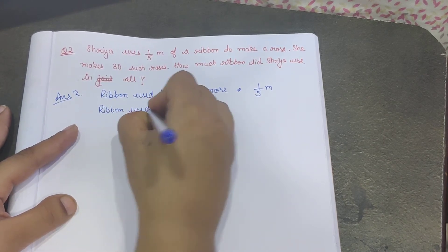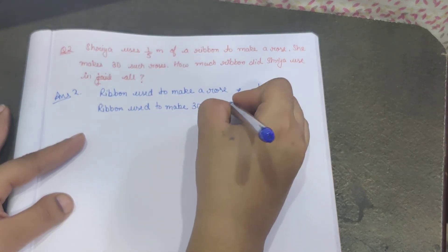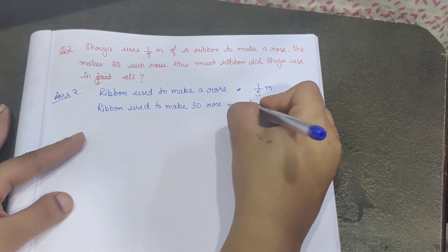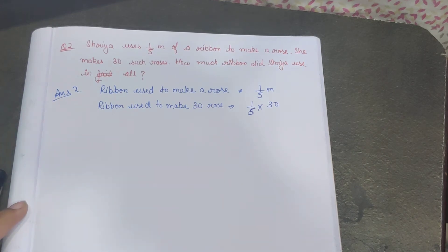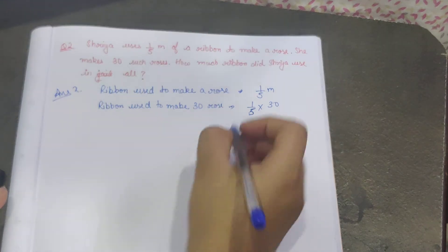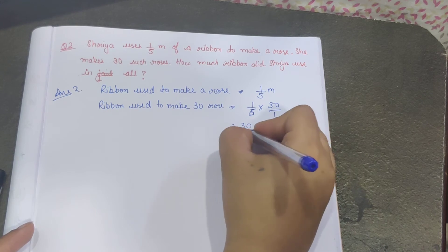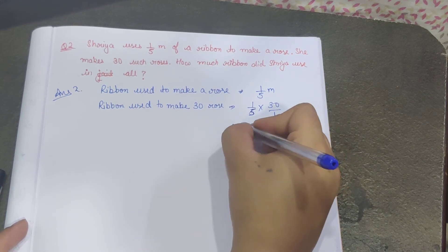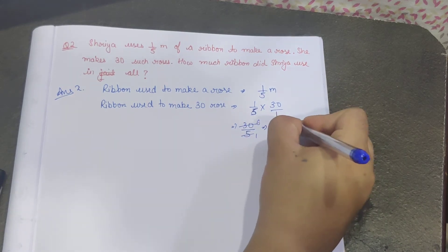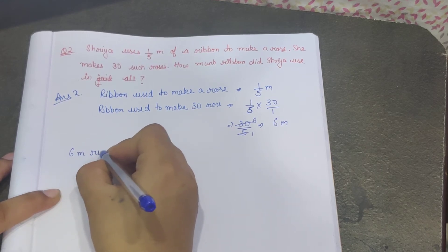Ribbon used to make 30 roses equals 1/5 × 30, which is 30/5. The common factor is 5, giving 1 and 6, so the answer is 6 meters. Shreyar will use 6 meters of ribbon in all.